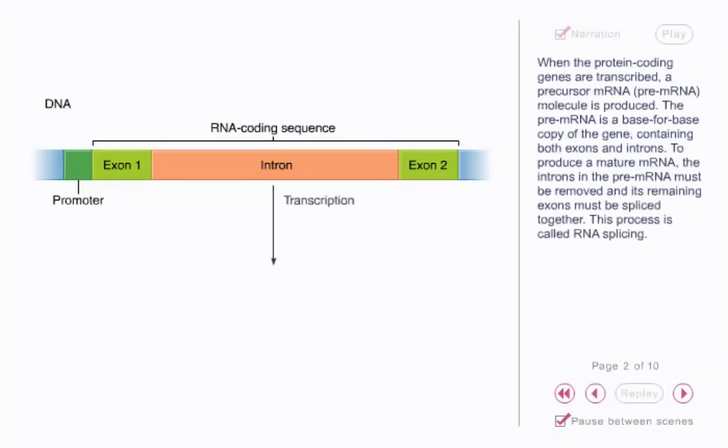When the protein-coding genes are transcribed, a precursor mRNA molecule is produced. The pre-mRNA is a base-for-base copy of the gene, containing both exons and introns. To produce a mature mRNA, the introns in the pre-mRNA must be removed and its remaining exons must be spliced together. This process is called RNA splicing.